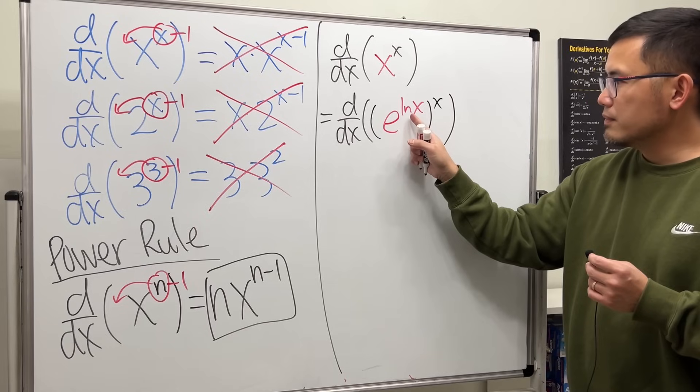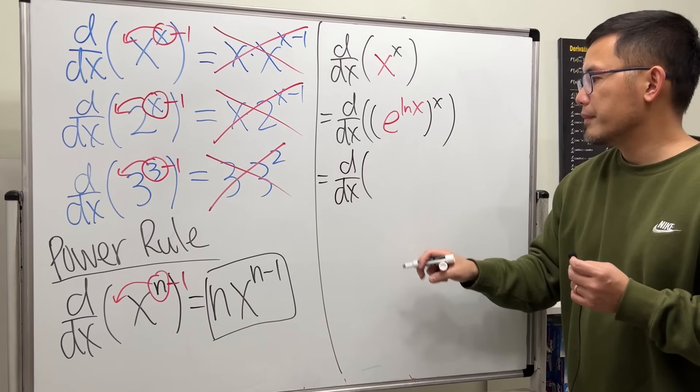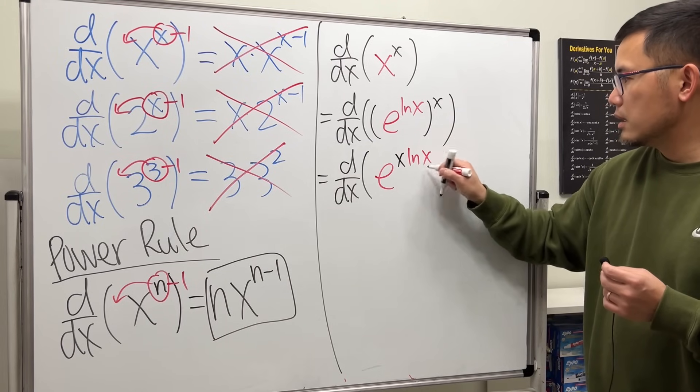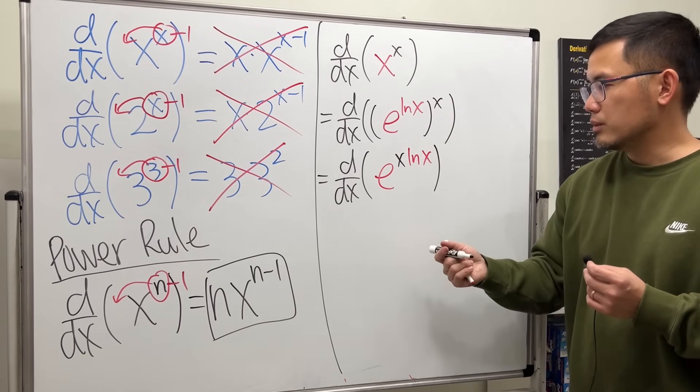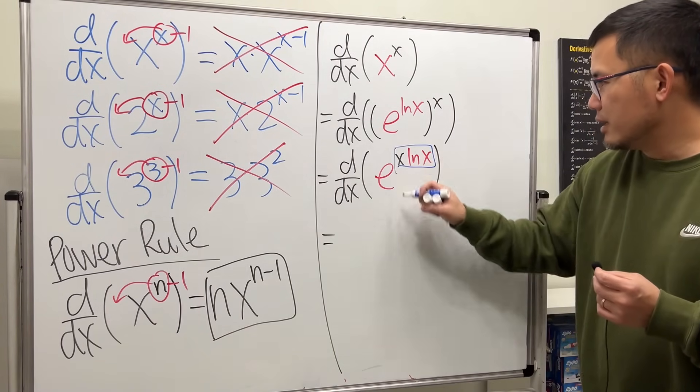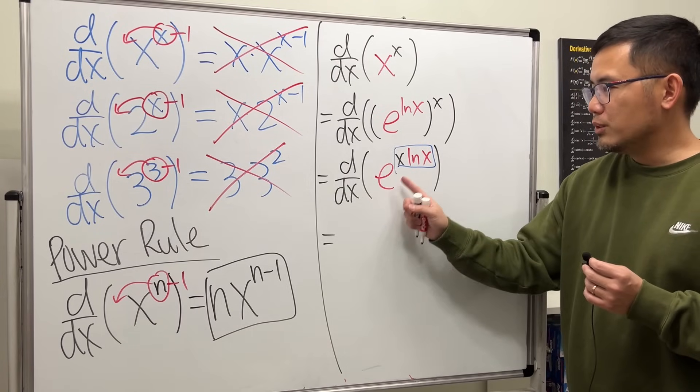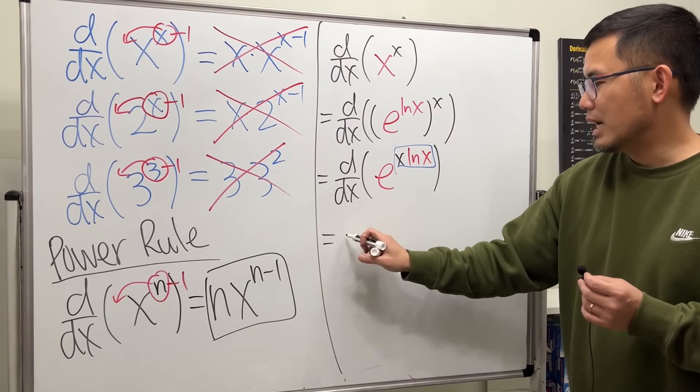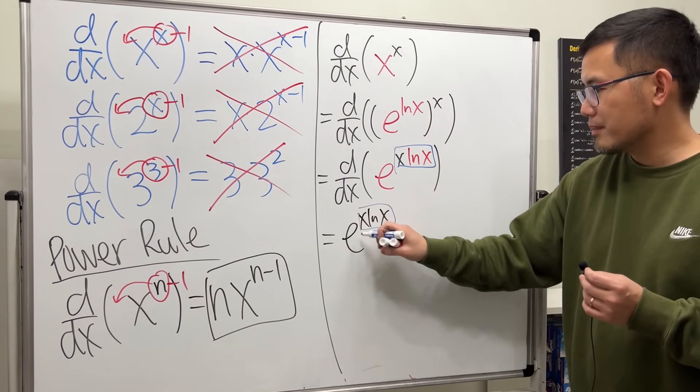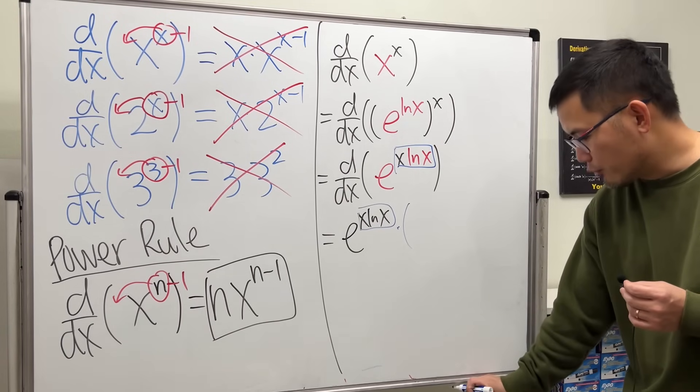Now you can see, we have this to that power, so we can just multiply the powers. This is the same as taking the derivative of e for the base, and then x times lnx. Now, we can just take the derivative. Taking the derivative of e to the something, so this is like a box right here. If you want to check out my chain rule video, I use the box to help us visualize. Taking the derivative of e to the box, it's just e to the box. So we still have e to the same thing. The box stays. But we have to use the chain rule. We have to multiply by the derivative right here.